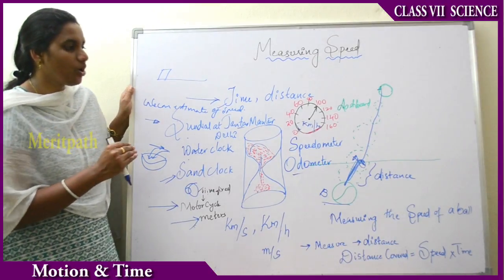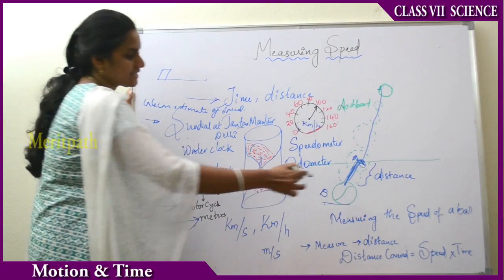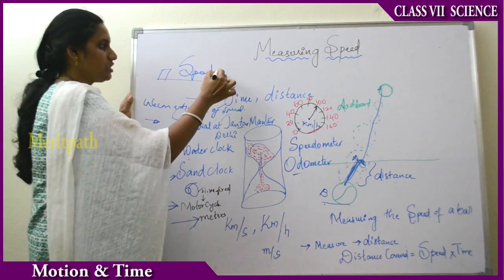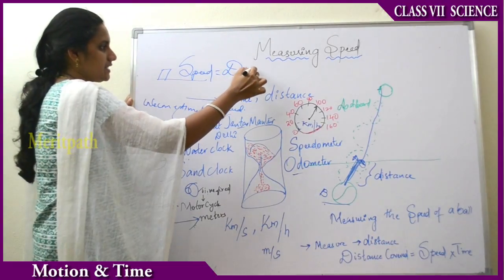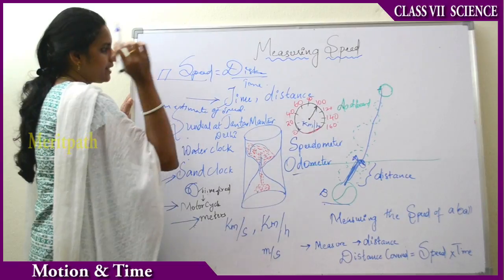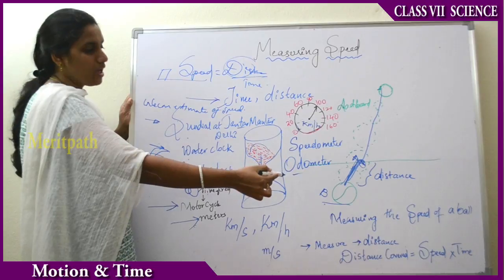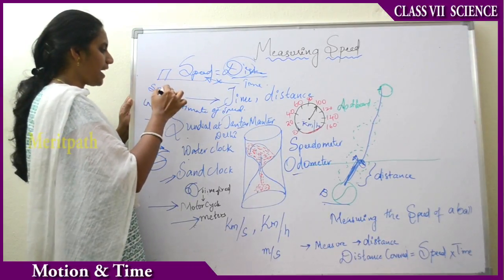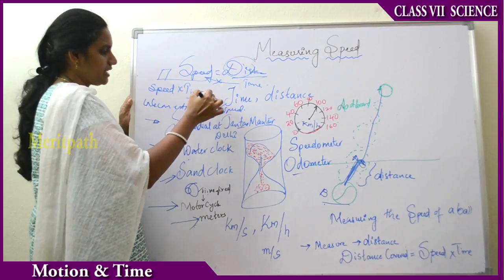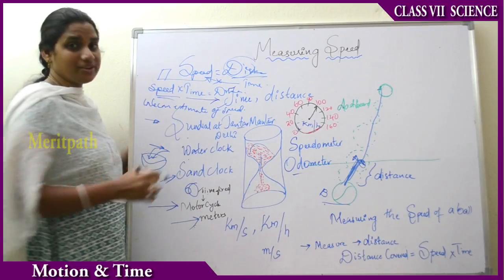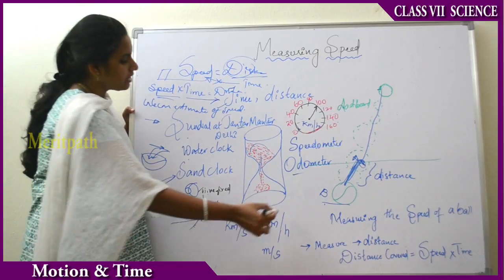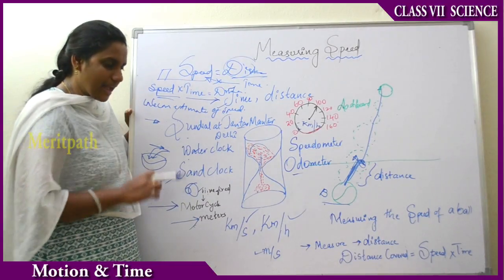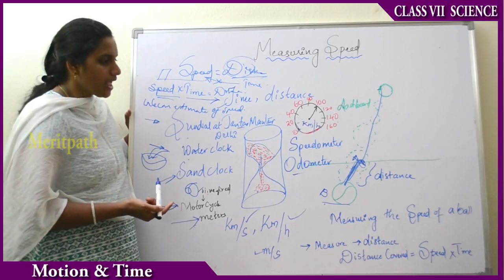Now we will see the measuring of the speed of a ball with the help of calculating the distance. Speed is defined as the distance covered divided by the time taken to travel that distance — that is, the rate of distance by time. The distance covered is noted. The product of speed and time will give us the distance. Therefore, distance traveled equals speed multiplied by time. The units of measurement are kilometers per hour, kilometers per second, or meters per second — which are considered as units of speed.